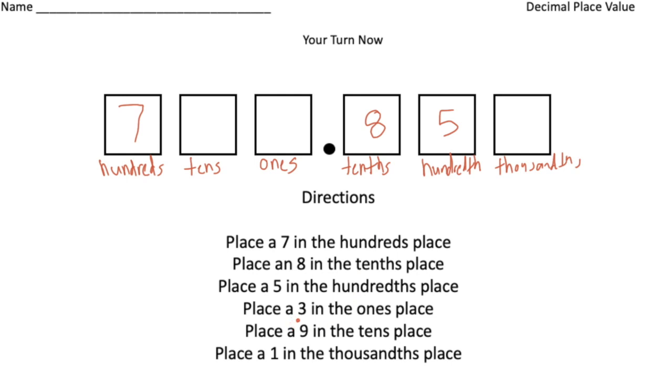And place a three in the ones place. Well, the ones place is to the left of the decimal point. Place a nine in the tenths place. So nine goes here. And then finally place a one in the thousandths place. And that goes right there. All right, how'd you do?